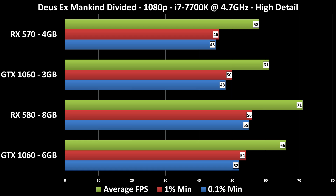Here we are at the first result: Mankind Divided 1080p high detail. The green bars are the average frame rate, the red bars are 1% minimum, and the blue bars are 0.1% minimum. All but the RX 570 averaged over 60 frames per second, though except for the RX 580, they were pretty close to 60 FPS. This is the built-in benchmark, not the game itself. This is meant to be a comparative result to see relative performance between the cards, not to tell you whether the game is fully playable throughout at these settings. Basically, the RX 580 is the fastest card, with the GTX 1060 6GB following behind.